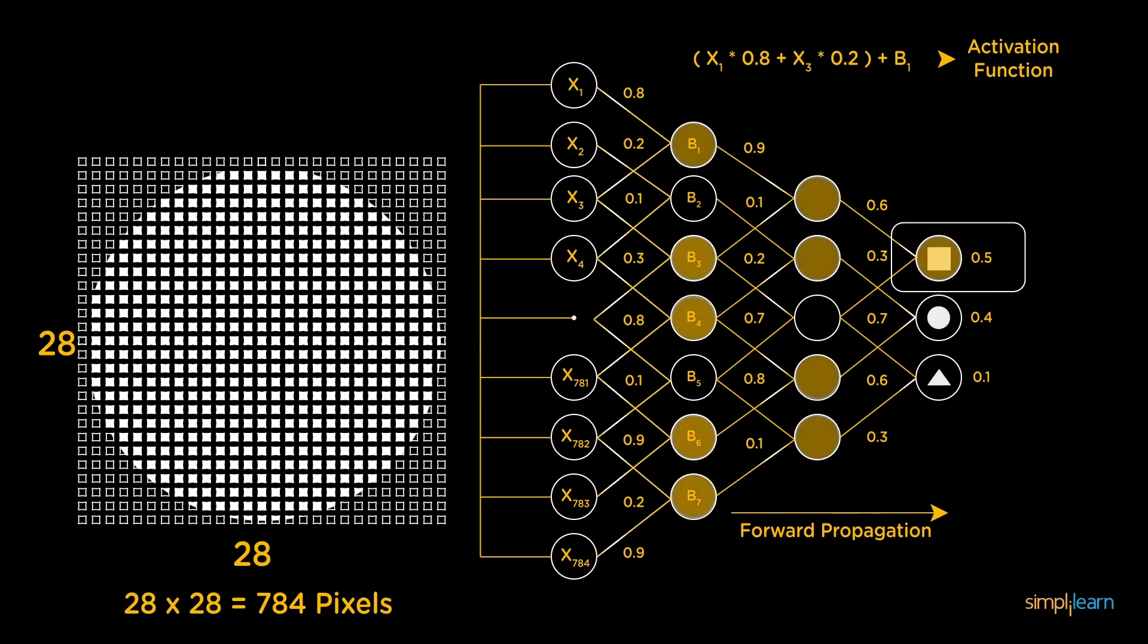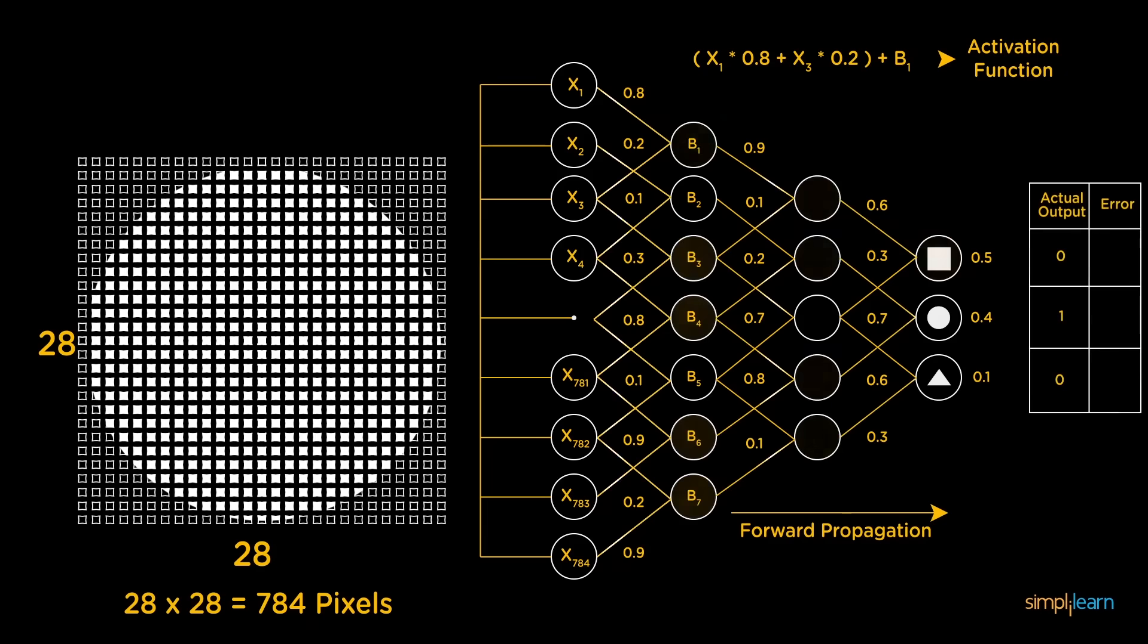Of course, just by looking at it, we know our neural network has made a wrong prediction. But how does the network figure this out? Note that our network is yet to be trained. During this training process, along with the input, our network also has the output fed to it. The predicted output is compared against the actual output to realize the error in prediction.